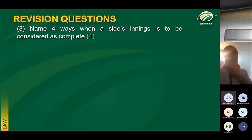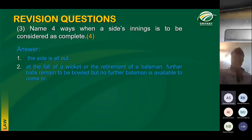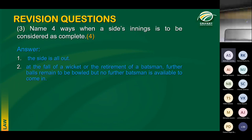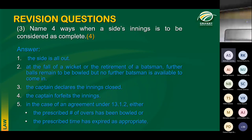Third revision question: name four ways when a side's innings is considered to be completed. Firstly, when the side is all out. Secondly, at the fall of a wicket or the retirement of a batter where no further batter is available. Thirdly, when the captain declares. Fourthly, when the captain forfeits the innings. Lastly, the innings is also completed when there was an agreement to have a certain number of overs per innings or a prescribed time per innings.